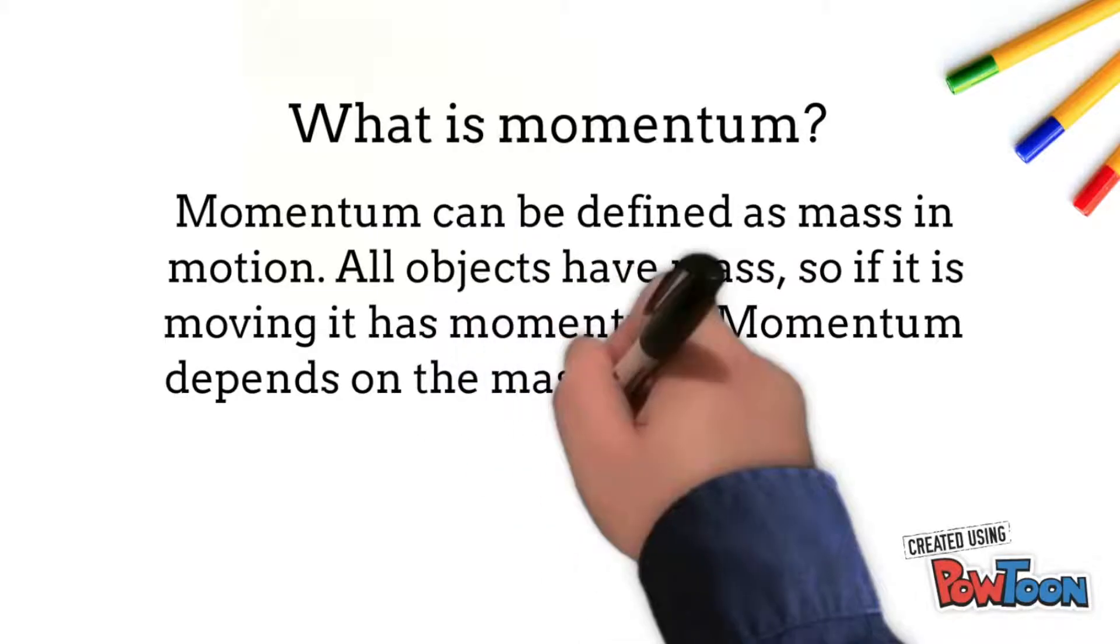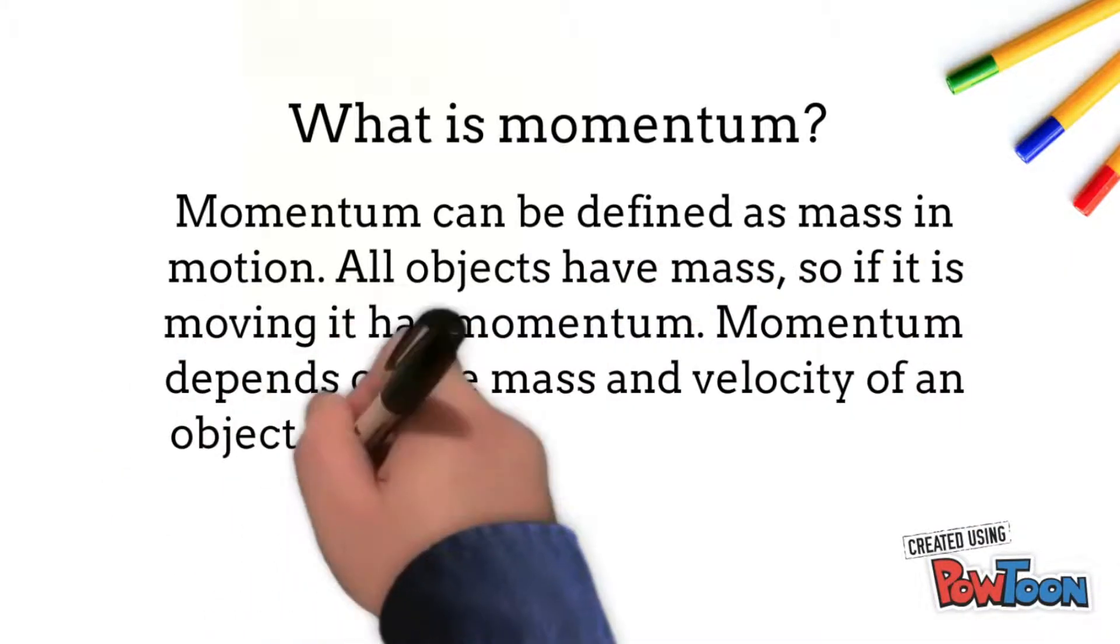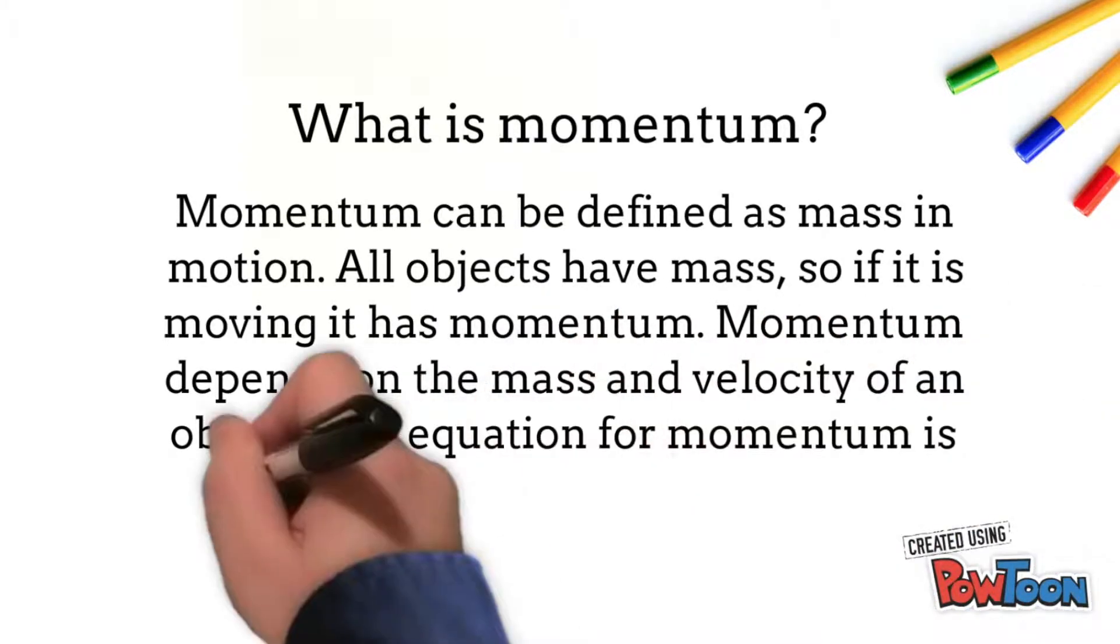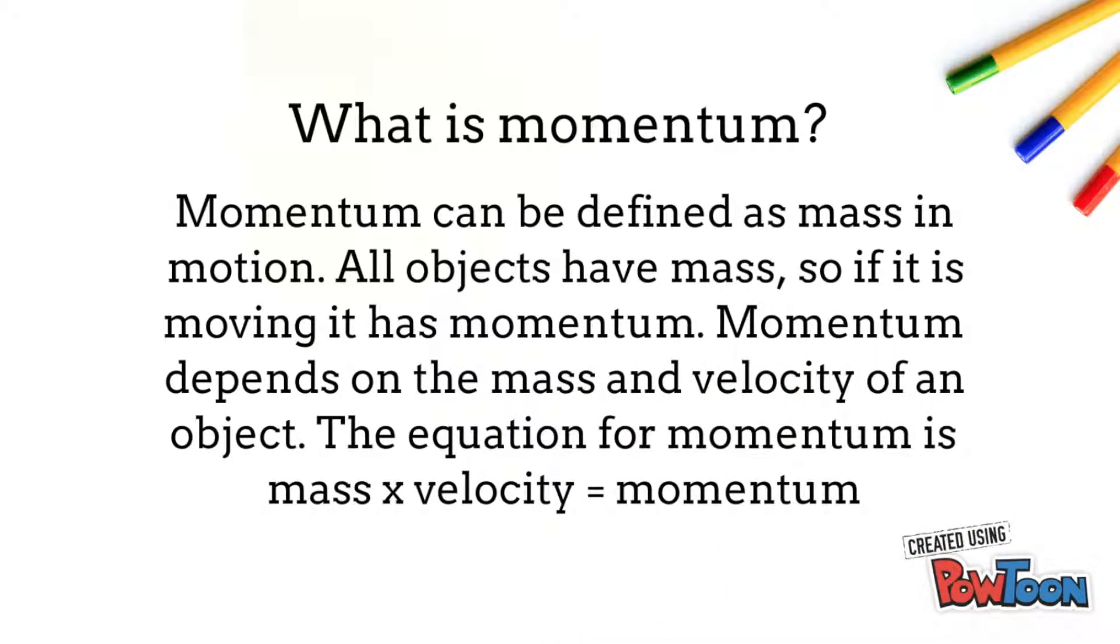Momentum depends upon the variables mass and velocity. In terms of an equation, the momentum of an object is equal to the mass of the object times the velocity of the object. Momentum equals mass times velocity.